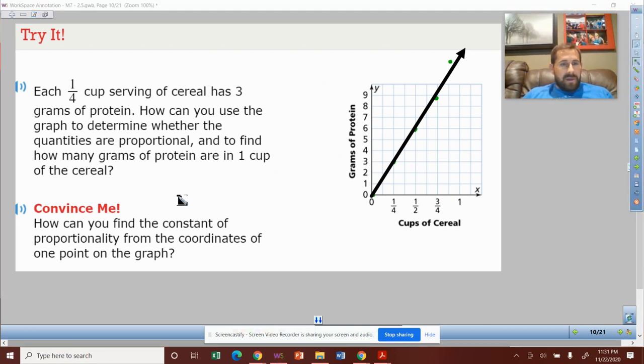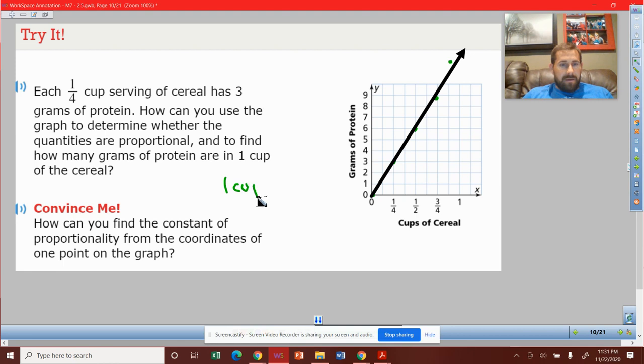So again, one cup is 12. We could have done that through the graph or through expanding a table. Now to convince, how can you find the constant of proportionality from the coordinates of one point on the graph? We can take any one of these points, we know that this is proportional.